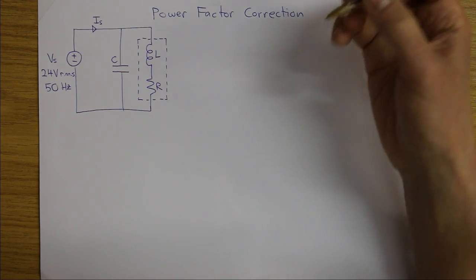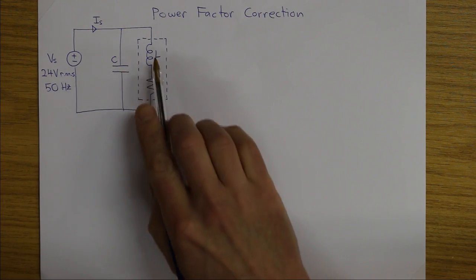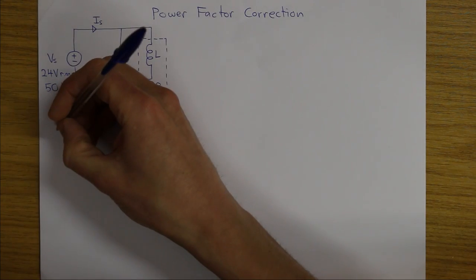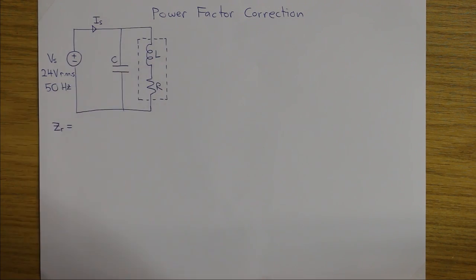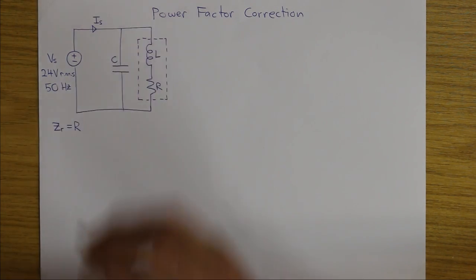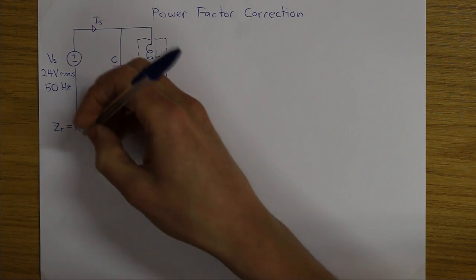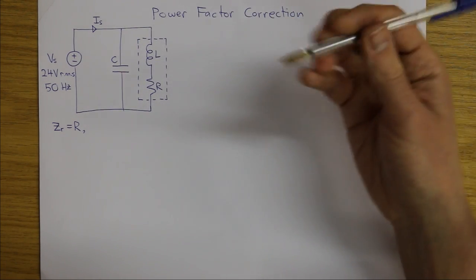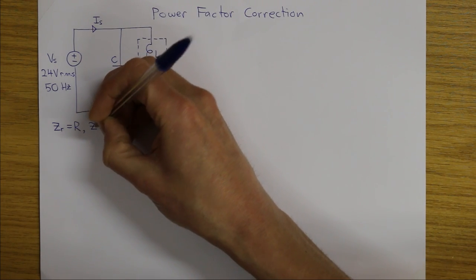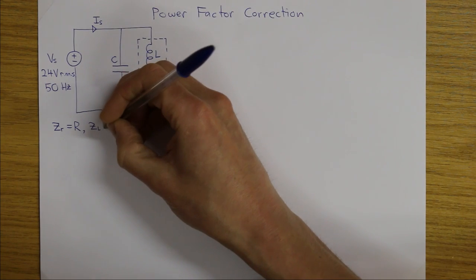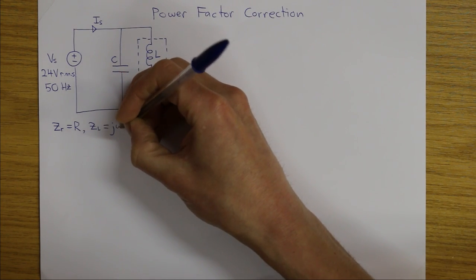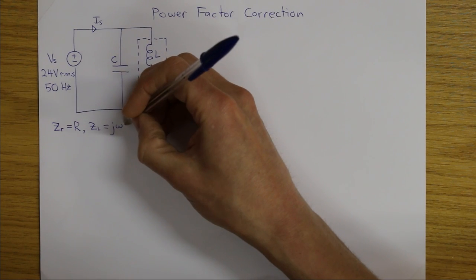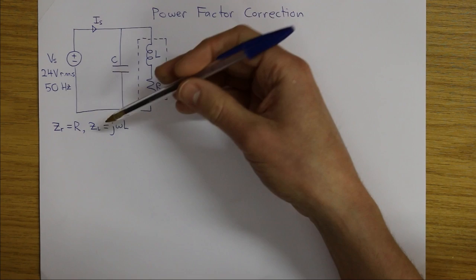I'll convert each element into an impedance and combine them into equivalent impedances. The impedance of a resistor ZR is simply equal to the resistance R. However, for inductors and capacitors, impedance is frequency dependent. ZL, the impedance of an inductor, equals jωL, where j is the square root of minus one and ω is the angular frequency. ZC, the impedance of a capacitor, equals 1/(jωC).